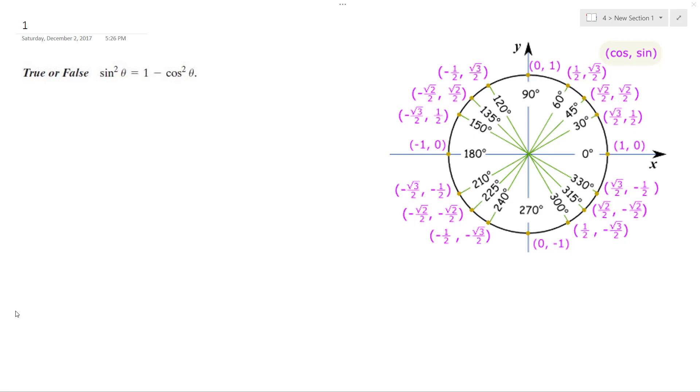All right, solving this problem. So this is true, that sine squared theta equals one minus cosine squared theta. And I'm going to prove it to you.